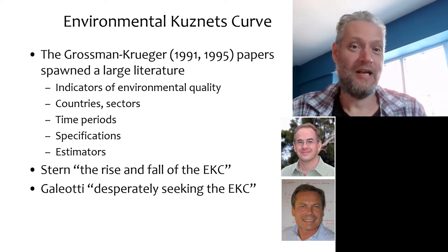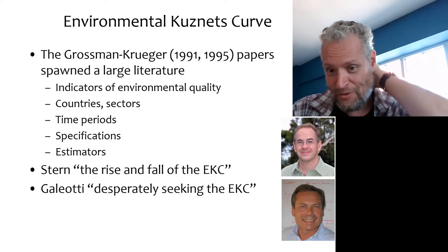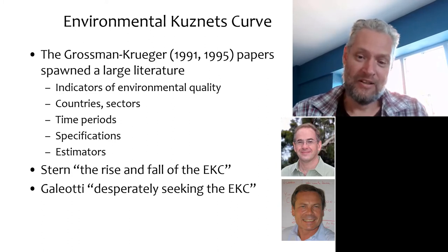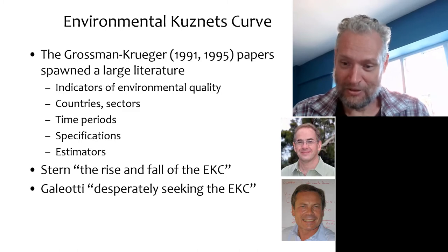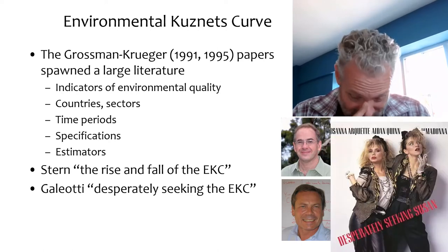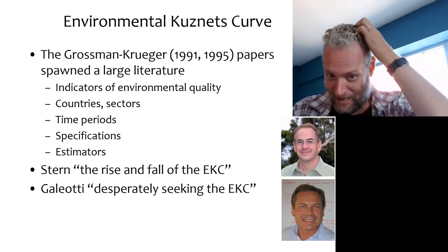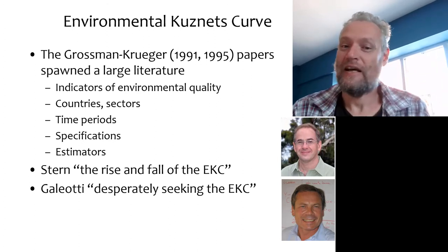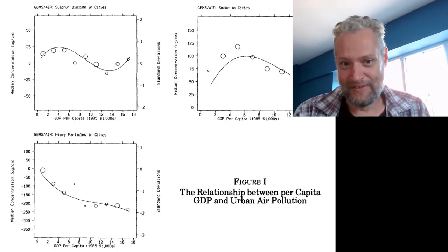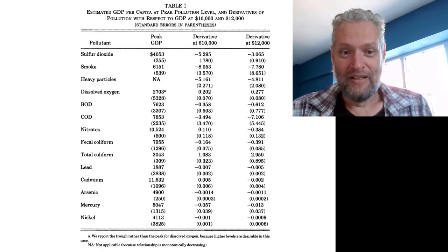Krueger styled himself as a labour economist, but his most cited paper is on the environment. This has led to two review papers — one by David Stern and one by Maccio Gagliotti. Gagliotti titled his paper 'Desperately Seeking the Environmental Kuznets Curve.' This literature essentially shows the same sort of confusion that was in the original paper: all sorts of different shapes, and depending on what you look at, you may or may not be able to see an environmental Kuznets curve.